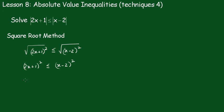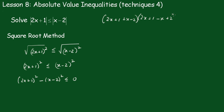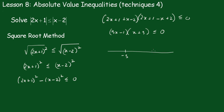You could remove the brackets, but it's not necessary. Taking this across to the other side, we get less than or equal to 0. Now using the difference of two squares technique, we'll have (2x plus 1 plus x minus 2) times (2x plus 1 minus x plus 2) — just make sure you're careful with the signs here — is less than or equal to 0. This becomes, on one side, (3x minus 1), and this side becomes (x plus 3), less than or equal to 0.